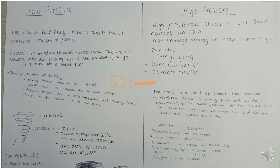You can get low pressure in summer and winter, and high pressure in summer and winter, but they're both slightly different. Low pressure is associated with rainfall and winds. Low pressure occurs where you've got rising air — rising air gets cooler.